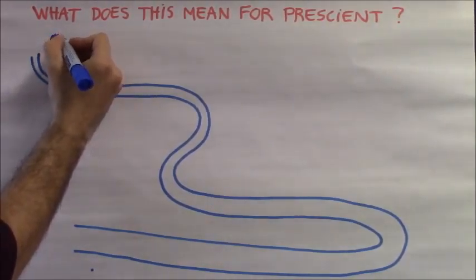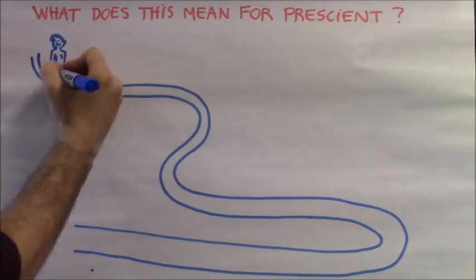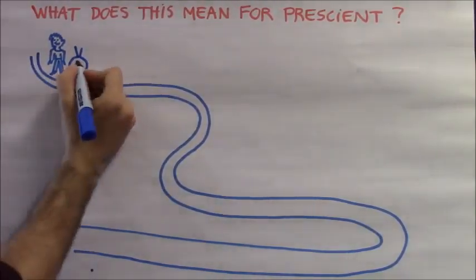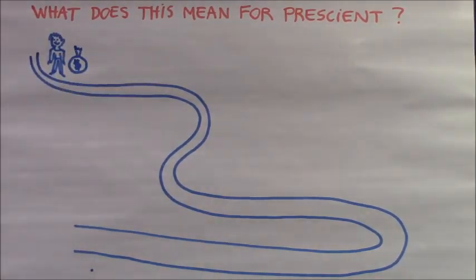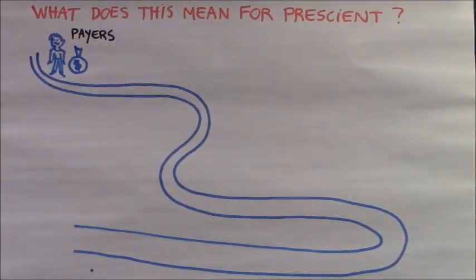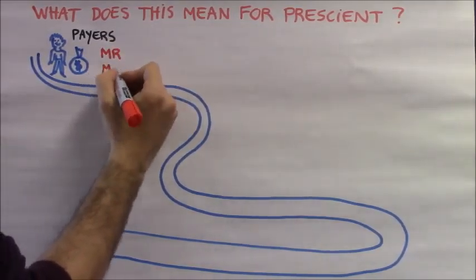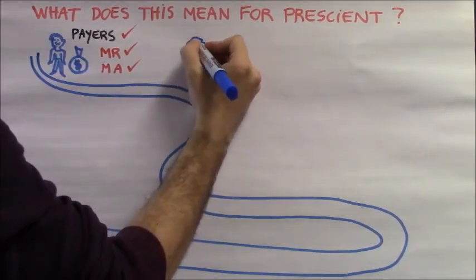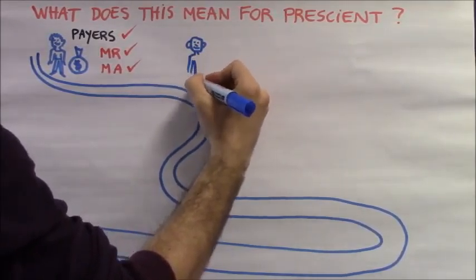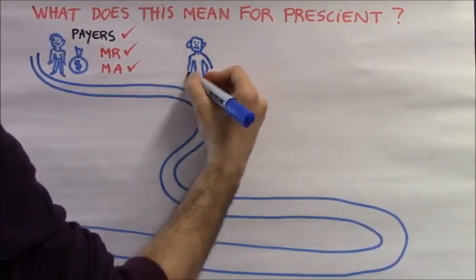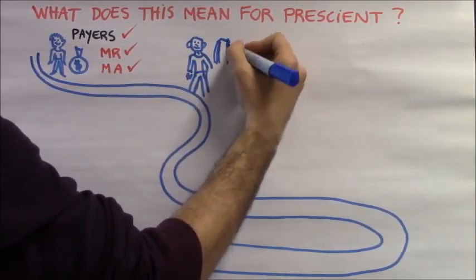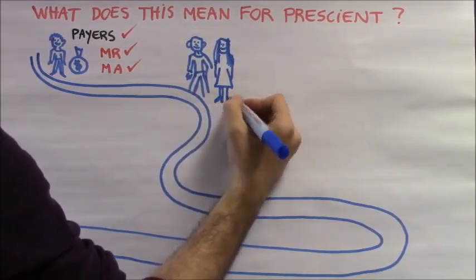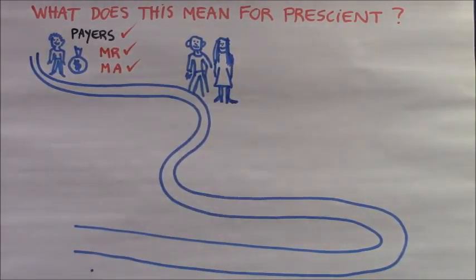So what does this mean for Prescient? Well, it means that we can partner our clients throughout the whole journey. We have the ability to understand what payers want through doing market research and having market access expertise. We can use our therapy experts to help build their TPPs, give them direction about the relevant comparator, what are the relevant endpoints to focus on. So this clinical expertise is vital.